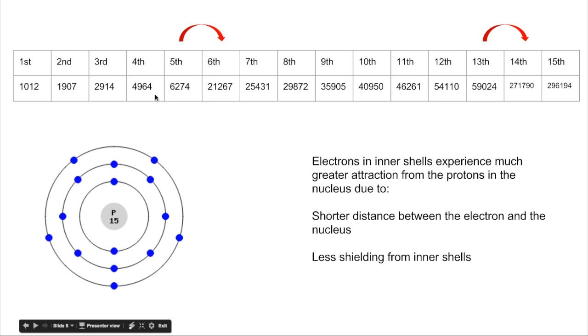But when we're going from the fifth electron to the sixth being removed, there's a big jump up in energy from just over 6,000 to just over 21,000.